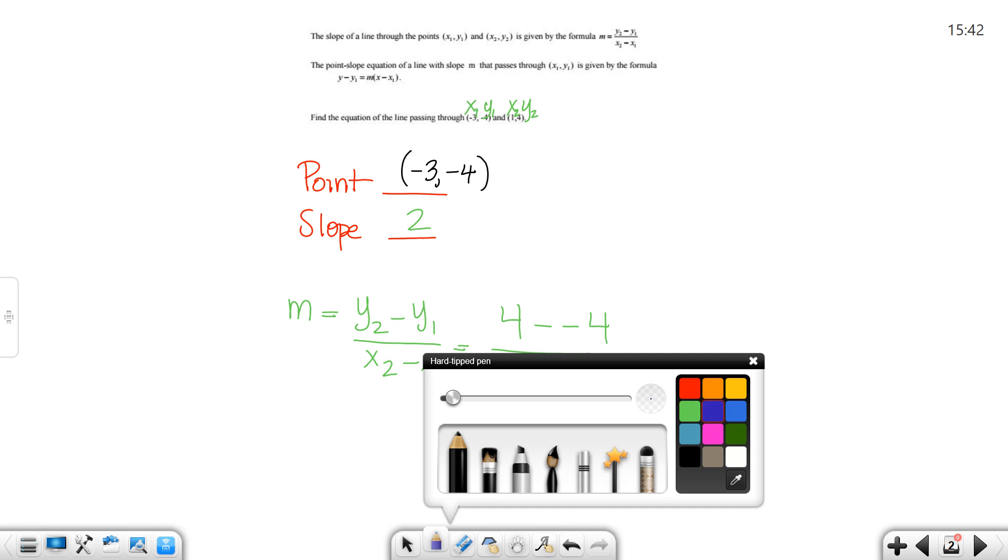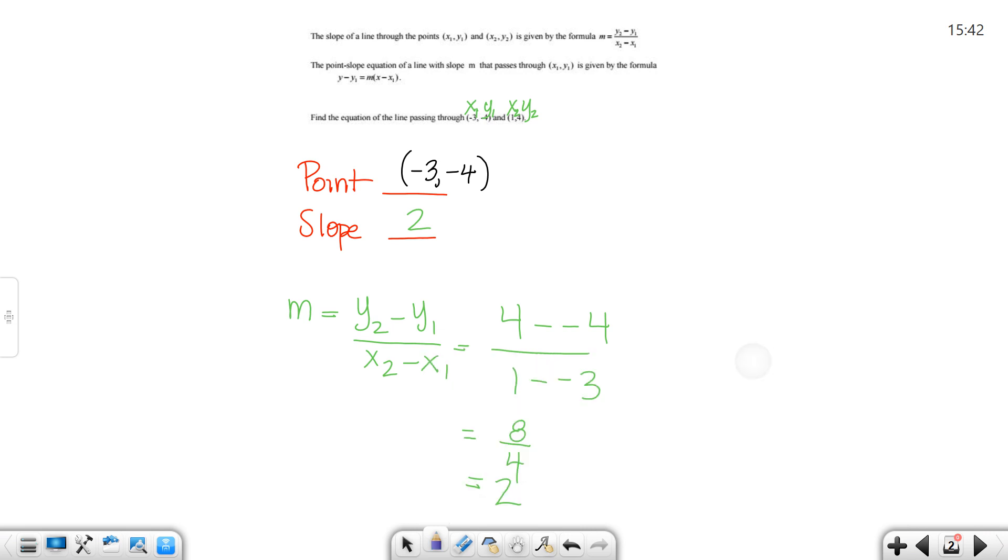Now, what I have to do next is put the point and the slope into the point-slope formula. So, the point-slope formula you will need to know for all of your lessons in calculus, and it is y minus y₁ equals m times x minus x₁. Okay, so following along, this negative 3 will be my x₁, and this negative 4 will be my y₁.